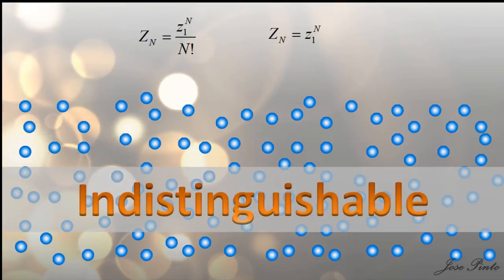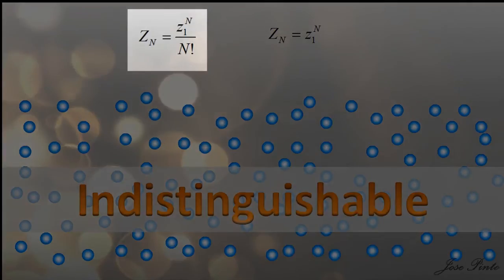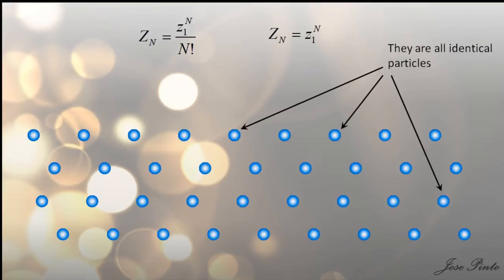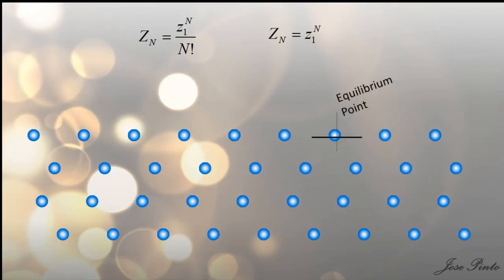With systems like this one, we use this kind of partition function. Now, imagine a system like a collection of harmonic oscillators. They are all identical. They do move, but they oscillate about a point of equilibrium. And this point is fixed in space. It has coordinates that do not change.